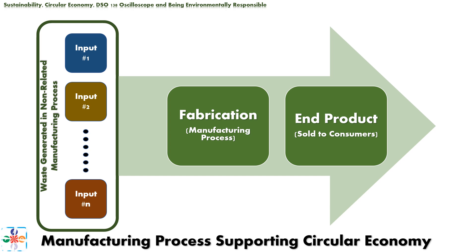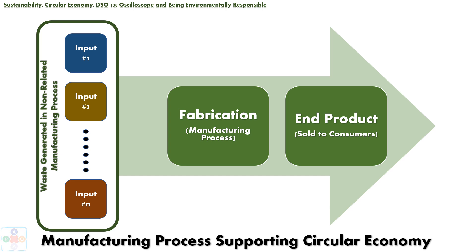The point where circular economy differs from linear manufacturing is the origin of input raw materials. In a production process that supports circular economy, waste from a non-related manufacturing process is used as an input or raw material. This is nothing new — people have been doing this for a long time. For example, wood shavings from a wood mill — a waste by-product of linear manufacturing — can be used as bedding for terrariums, compressed into blocks for heating, and so on. The point is in giving waste from one linear manufacturing process one or more usages in a non-related manufacturing process.